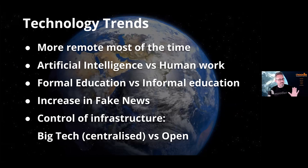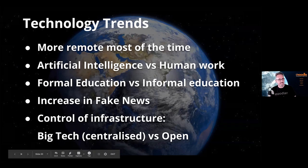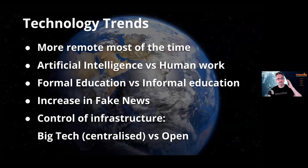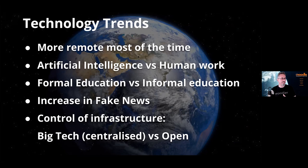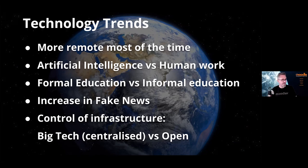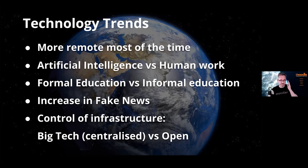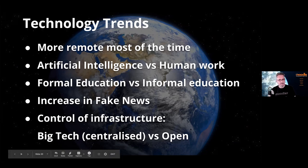To solve those problems we have to work with technology trends. We're going to be more remote. There's a rise of artificial intelligence — I've been following AI for 30 years and only in the last year does it feel really significant and potentially scary. It's going to take away human work and many jobs will disappear. There's also a battle between formal and informal education systems, an increase in fake news, and a big problem with control of infrastructure — centralized big tech getting justified criticism versus the open way.